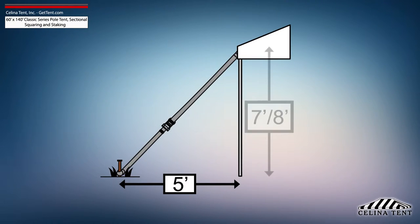5-foot staking is standard for tents with an eve height of 7 or 8 feet, and would need to be adjusted for eve heights other than this standard.